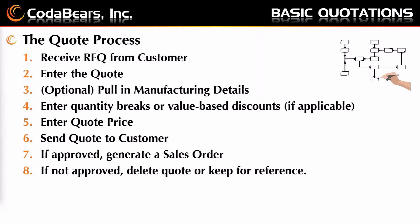We'll just add a line and add a part and get ready to sell it. The next thing you need to do is enter quantity breaks or value-based discounts, if they're applicable. Some of this will come in automatically from your customer, and you can decide at the quote level if you want to do any discounts. Then we enter a quote price and send the quote to our customer. If it's approved, we generate a sales order; if not approved, we can delete the quote or keep it for reference.